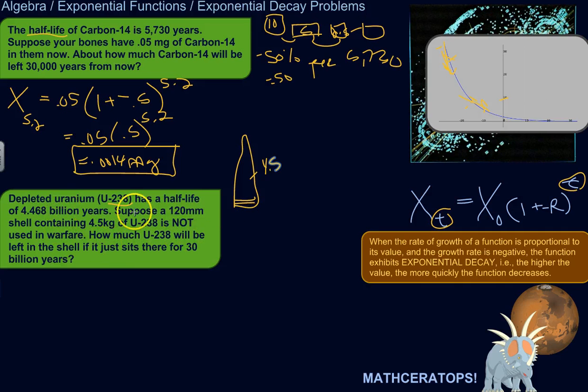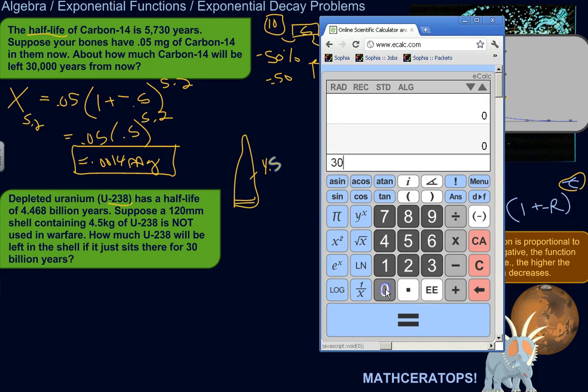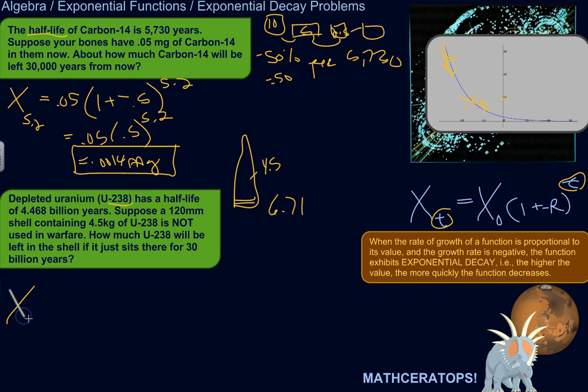So question number one, how many... Our growth cycle or decay cycle will be this half-life, 4.468 billion years. So we're going to write the equation in terms of how many half-lives will have happened over 30 billion years. So let's divide 30 billion by 4.468 billion. So 6.71 half-lives. 6.71 half-lives will occur. So the amount of U-238 after 6.71 half-lives have elapsed will be the original amount, 4.5 kilograms, times 1 plus the growth rate, which is negative 50%, raised to the power of the number of growth cycles that have elapsed.